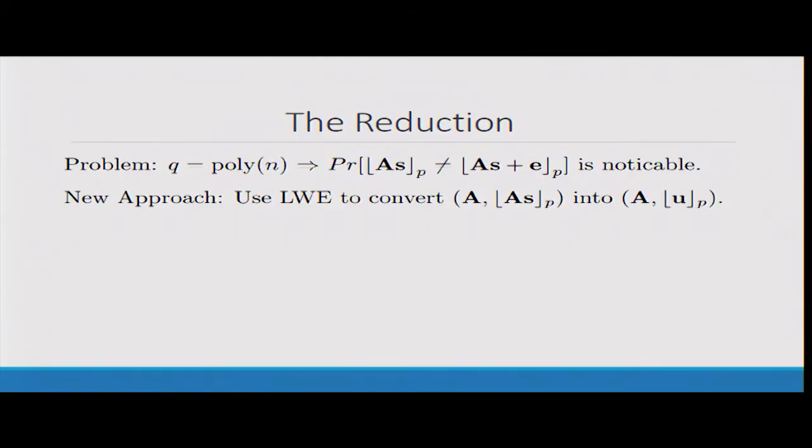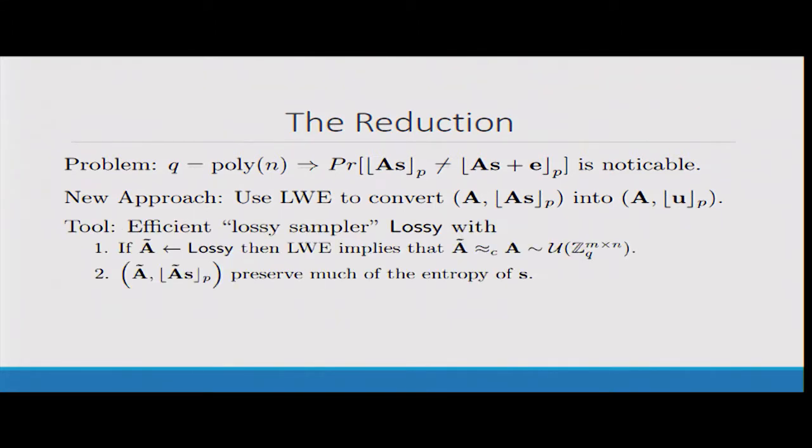So what's the idea behind this reduction? We said that we want this to work for polynomially sized Q. That means we're gonna have problems if we use the old approach because the probability that you end up in this overflow zone now is noticeable. So we need a new approach here, and we design a new algorithm called a lossy sampler.